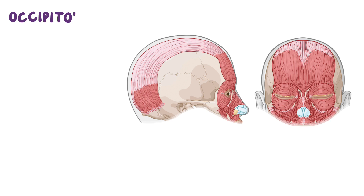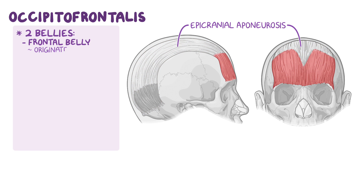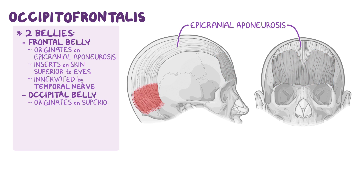First up, the occipitofrontalis muscle, which has two bellies. The two bellies are connected by the epicranial aponeurosis, which is the aponeurosis that makes the third layer of the scalp. The frontal belly originates on the epicranial aponeurosis and inserts on the skin superior to the eyes and nose. It is innervated by the temporal nerve.